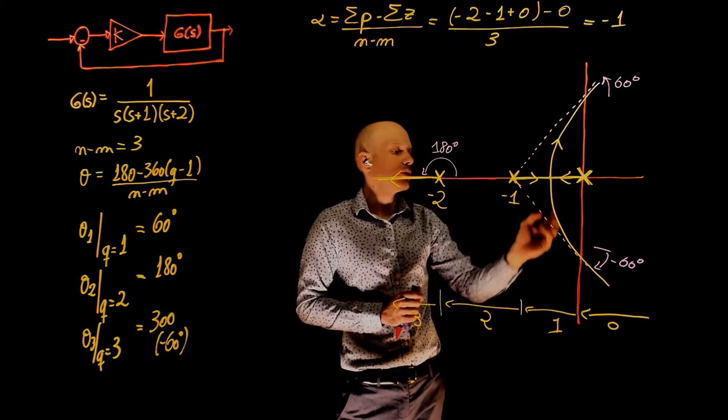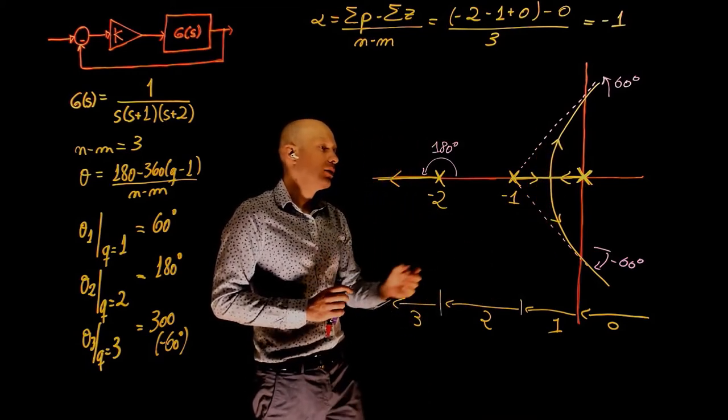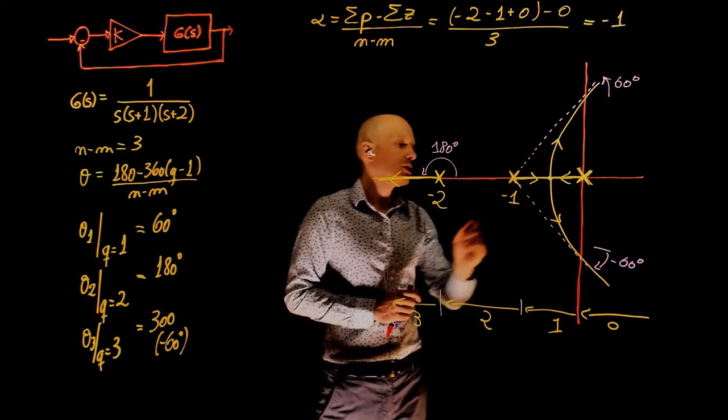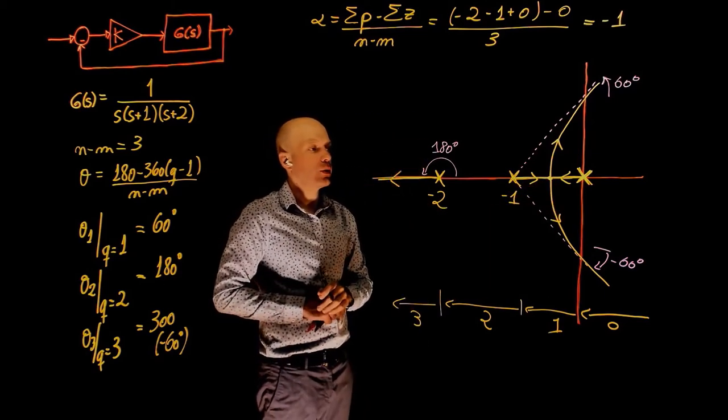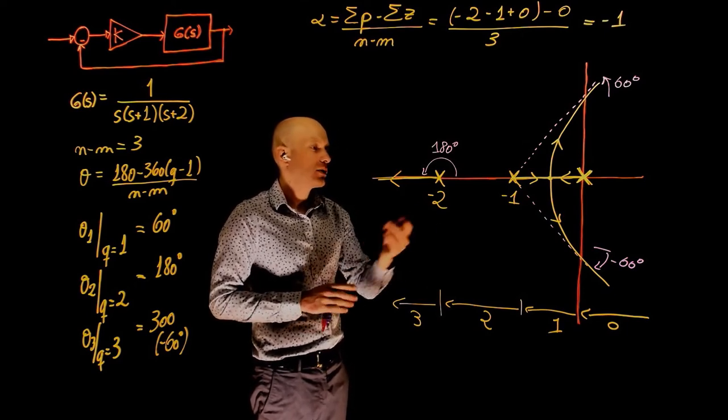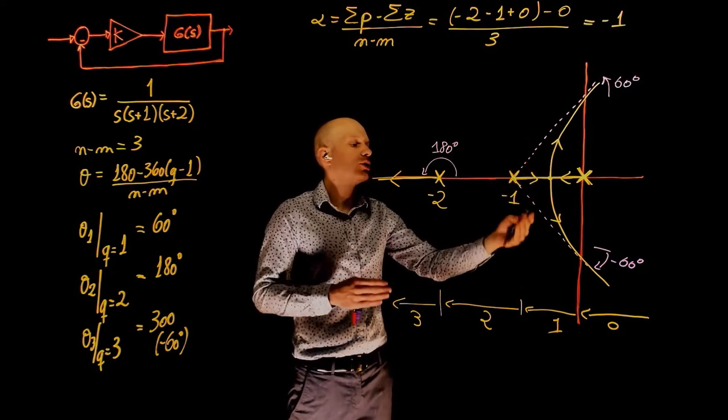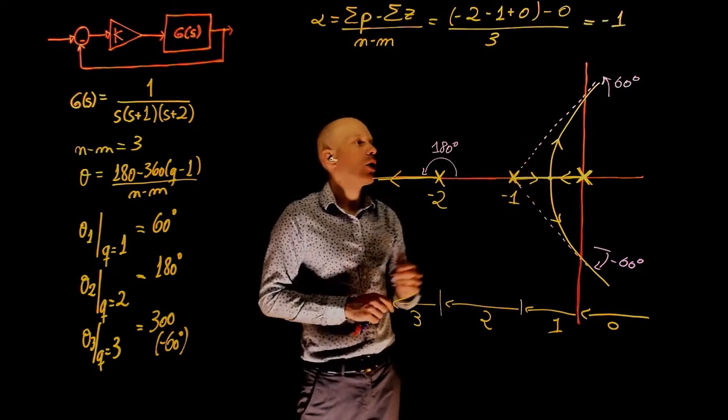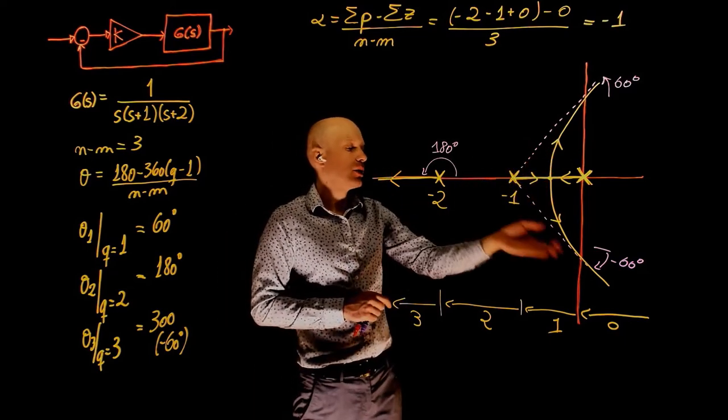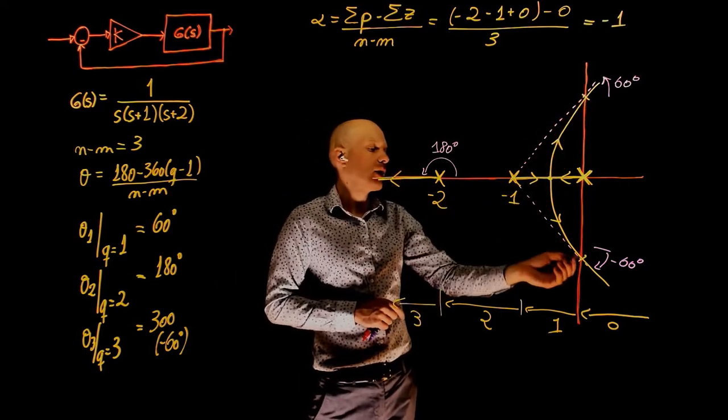As k tends to 0 from 0 to infinity, and we see again that at this point here, this is the point where they break away from the real axis and become complex conjugate numbers. Past that point, the system that was overdamped becomes now underdamped because the poles are complex conjugates. They are now going to plus minus infinity, but they are crossing the imaginary axis at these two points.